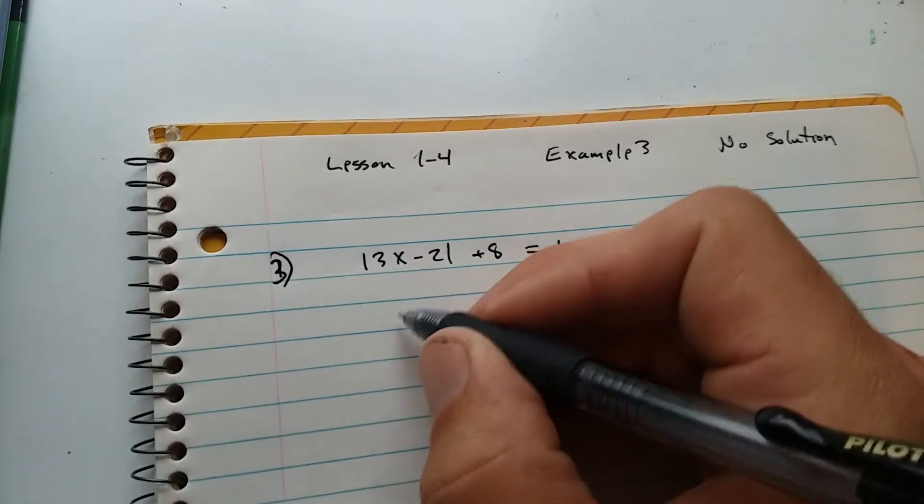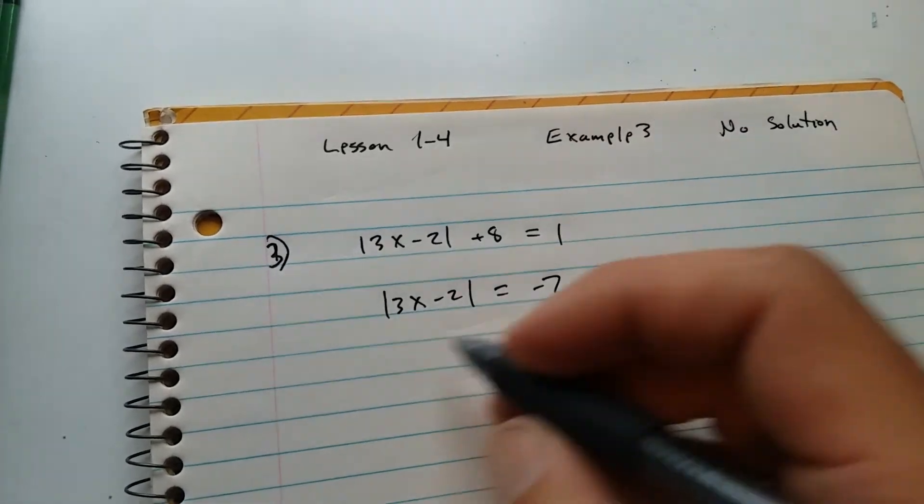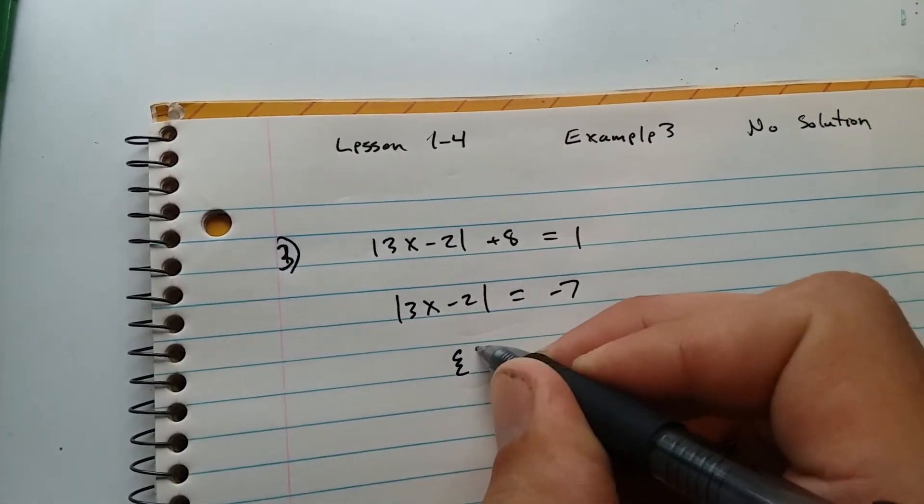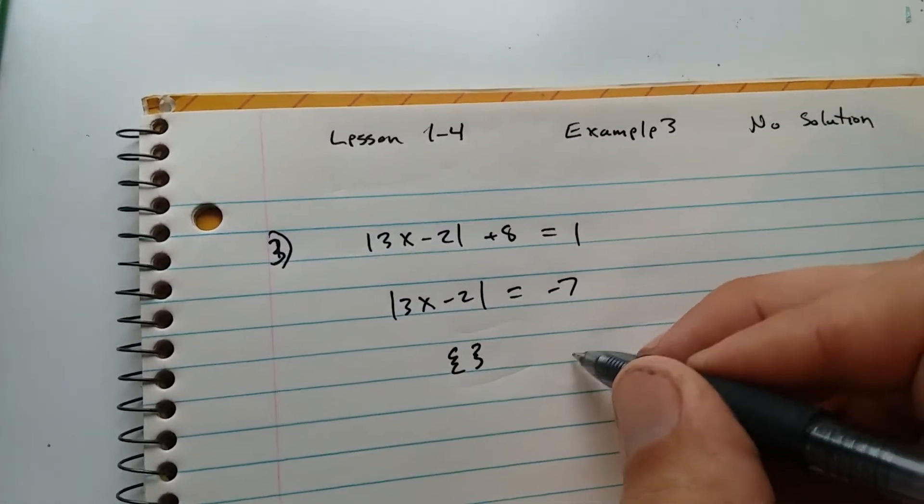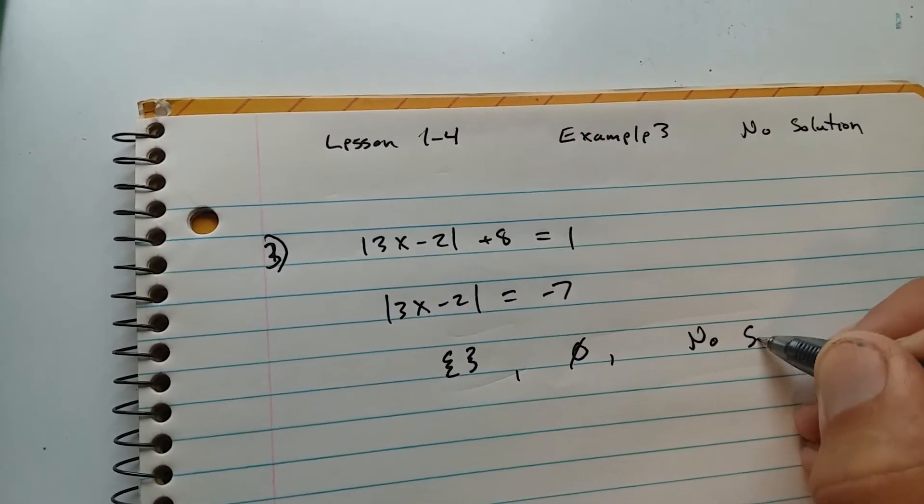Subtract 8 from both sides. Absolute value of 3x minus 2 is equal to negative 7. This is no solution. You can either do this, make that symbol, or this symbol, or write no solution.